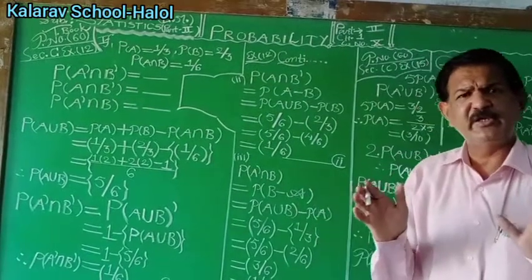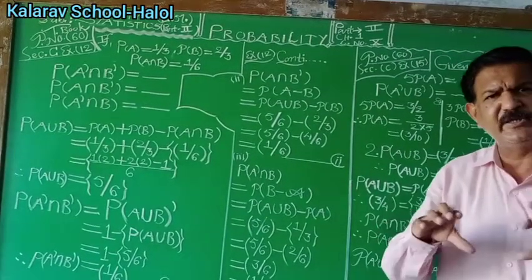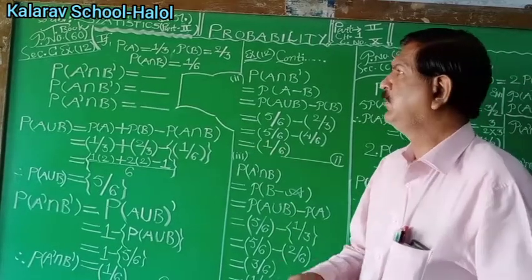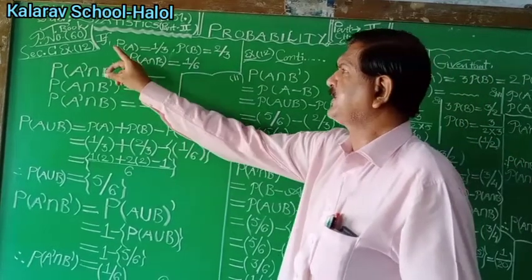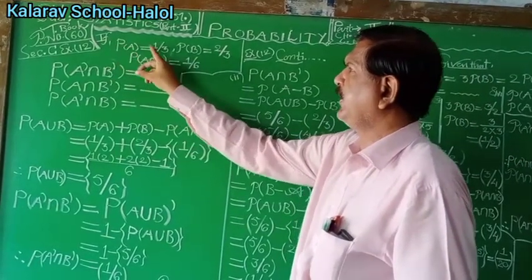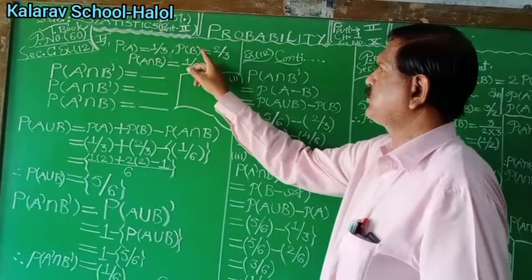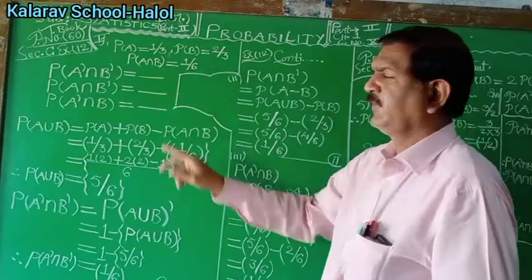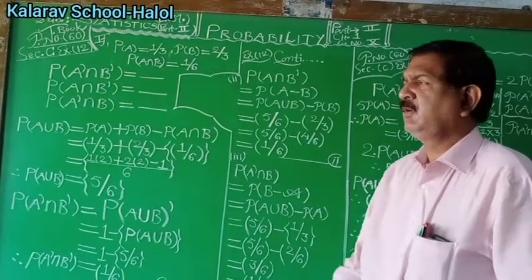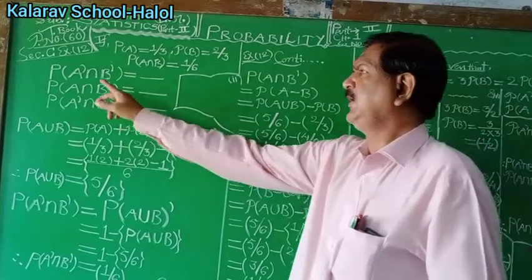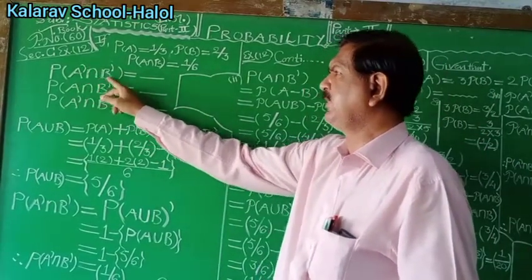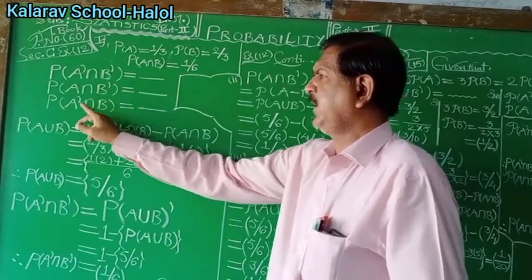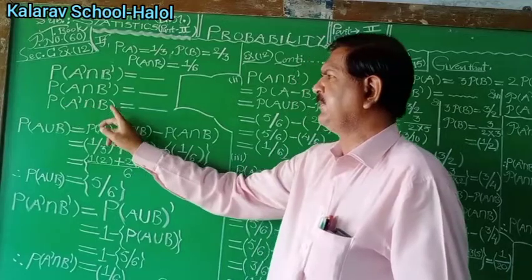Keep your textbook with you. See the example, read the question, and then try to solve it. It is given that probability of A is 1/3, probability of B is 2/3, and probability of A intersection B is 1/6. The required probabilities are: probability of A complement intersection B complement, probability of A intersection B complement, and probability of A complement intersection B.